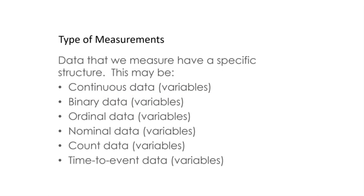Next, we will talk about the types of measurements. Data that is measured has a specific structure, and may include the following types: continuous data or continuous variable, binary data or binary variable, ordinal data, nominal data, count data, and time-to-event data.